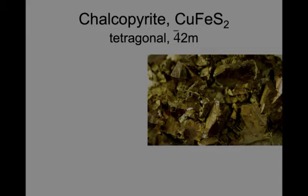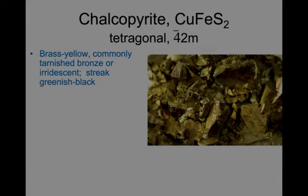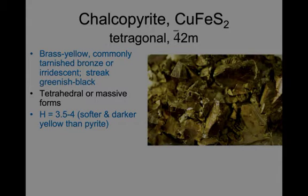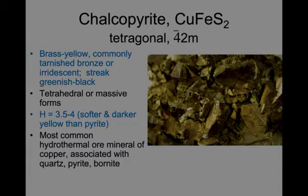Chalcopyrite is the next sulfide. Its color is brass yellow and it commonly tarnishes to bronze and iridescent blues and purples. The streak is greenish-black, which is quite characteristic. It forms tetragonal, or more commonly, massive forms. Hardness is 3.5 to 4 — softer and darker yellow than pyrite. It is the most common hydrothermal ore mineral of copper, associated with quartz, pyrite, and bornite.